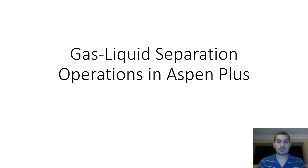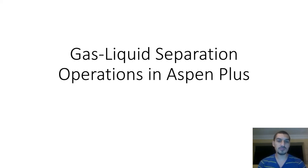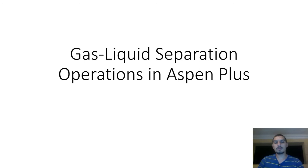In this video we're going to start a new topic in Aspen Plus — one of the most commonly used methods in chemical processes, which is gas-liquid separation. This refers to unit operations that include separation of components from the same or different phases involving gas and liquid phases. This includes distillation, the most famous application, as well as absorption, stripping, and other operations.